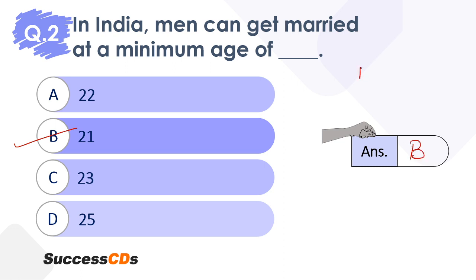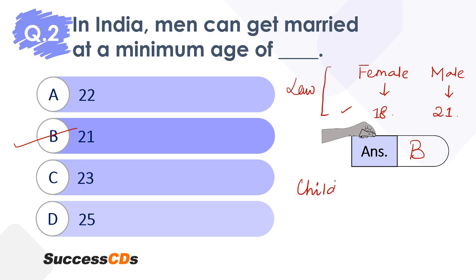And what about females? The female minimum age for marriage is 18. So the minimum age for female members to be married is 18, and for males it is 21. If marriage happens before these ages, this is against the law and will be classified under the category of child marriage. Our law specifies that beyond or above this age you can marry, but below this age for males you will not be allowed to marry. If you do, that means you are violating the law.